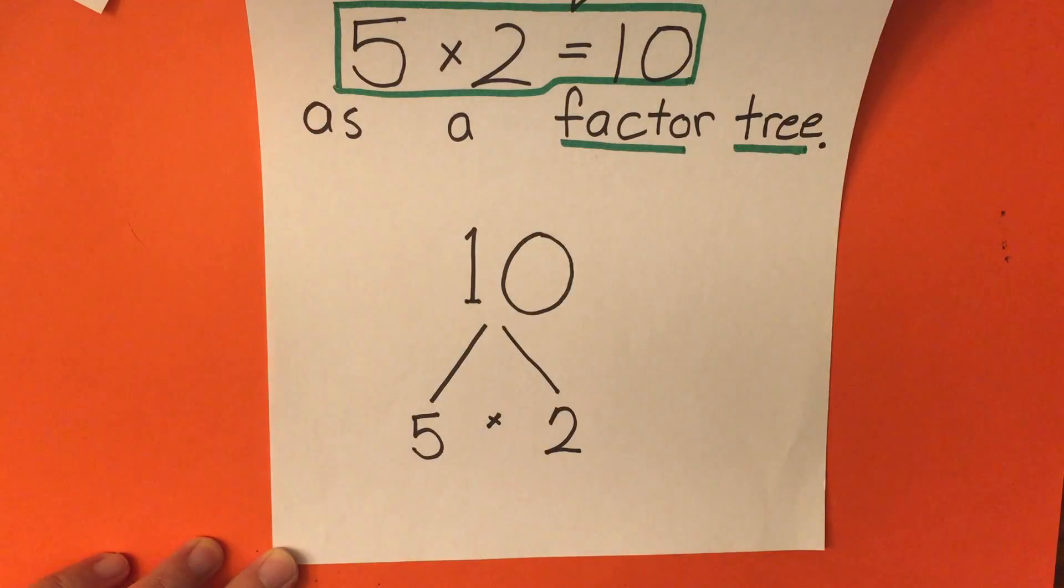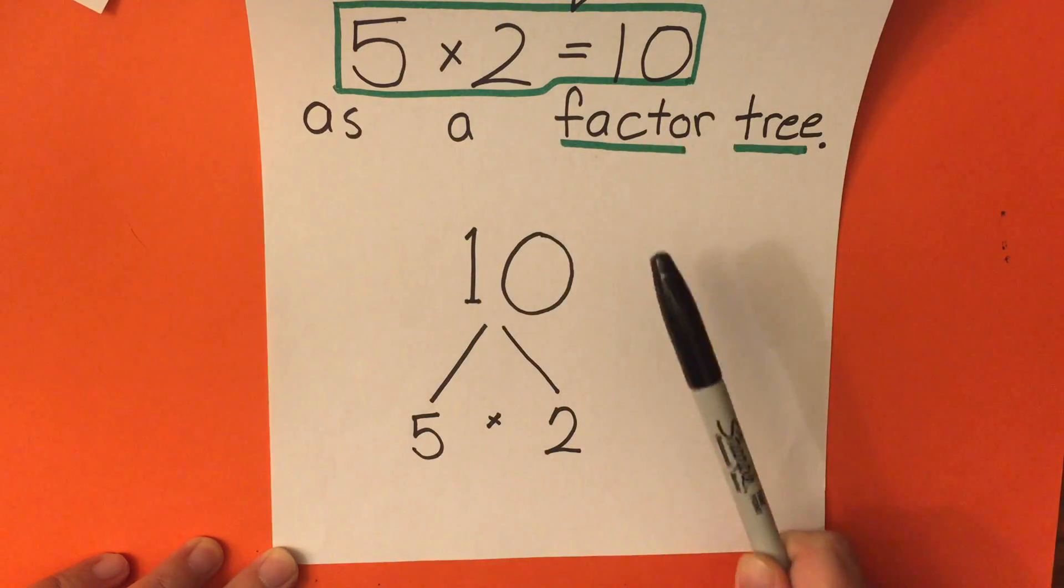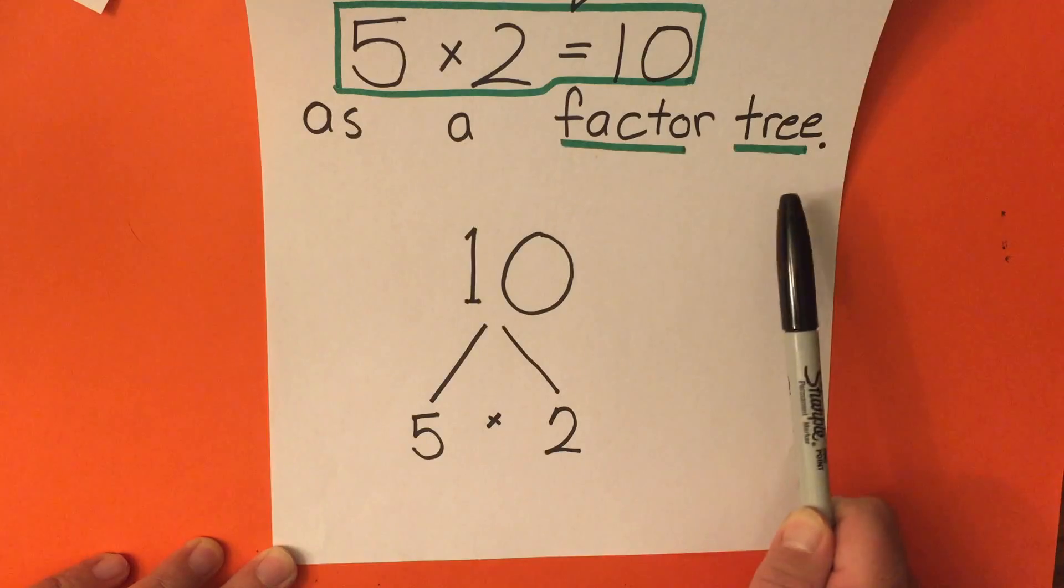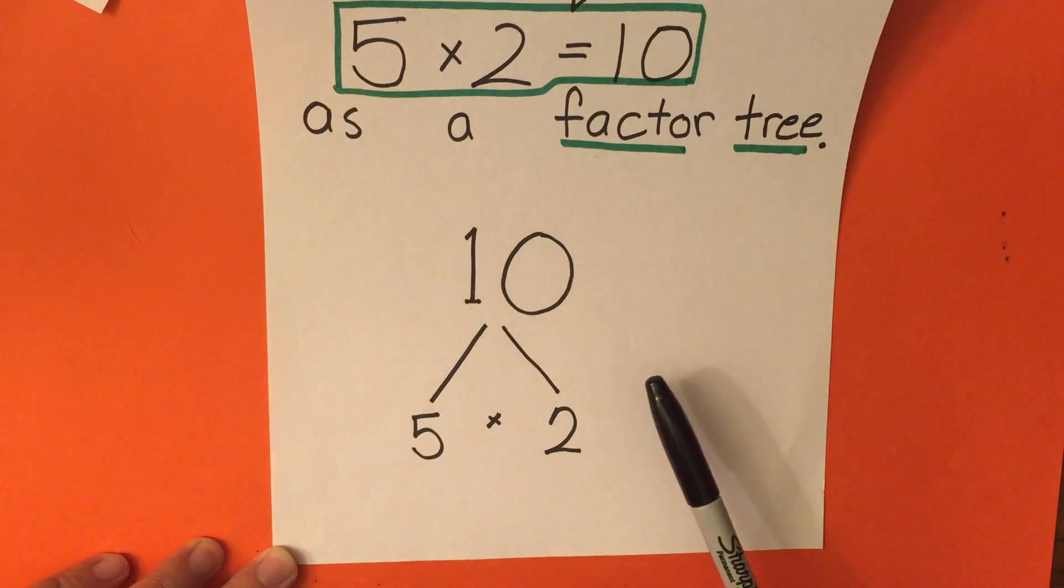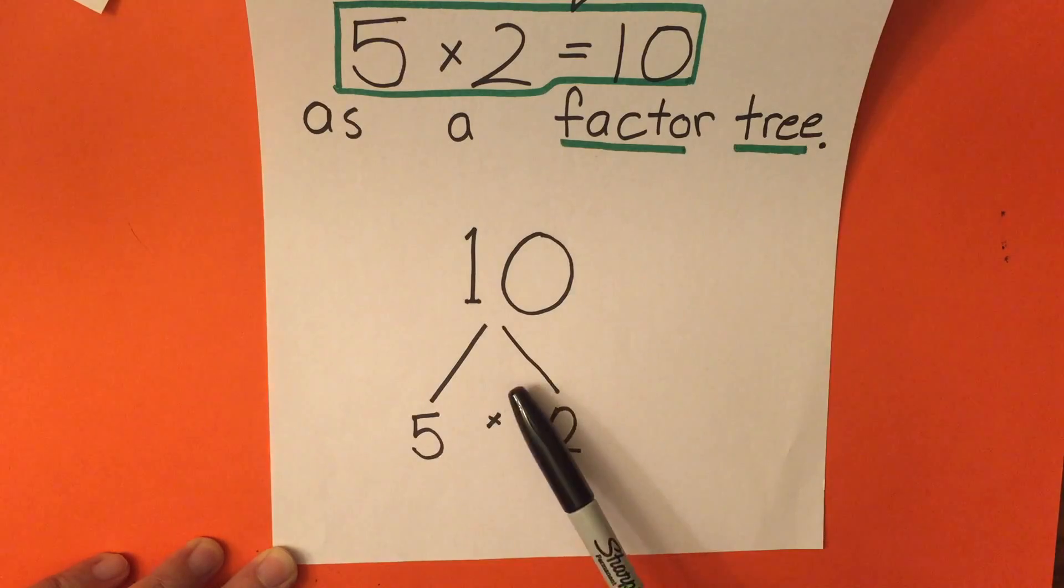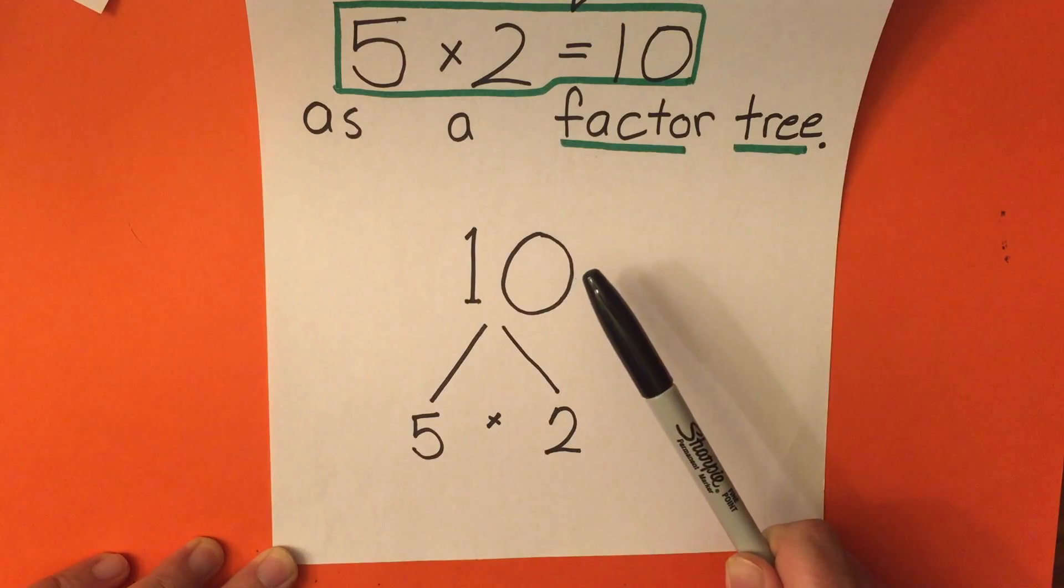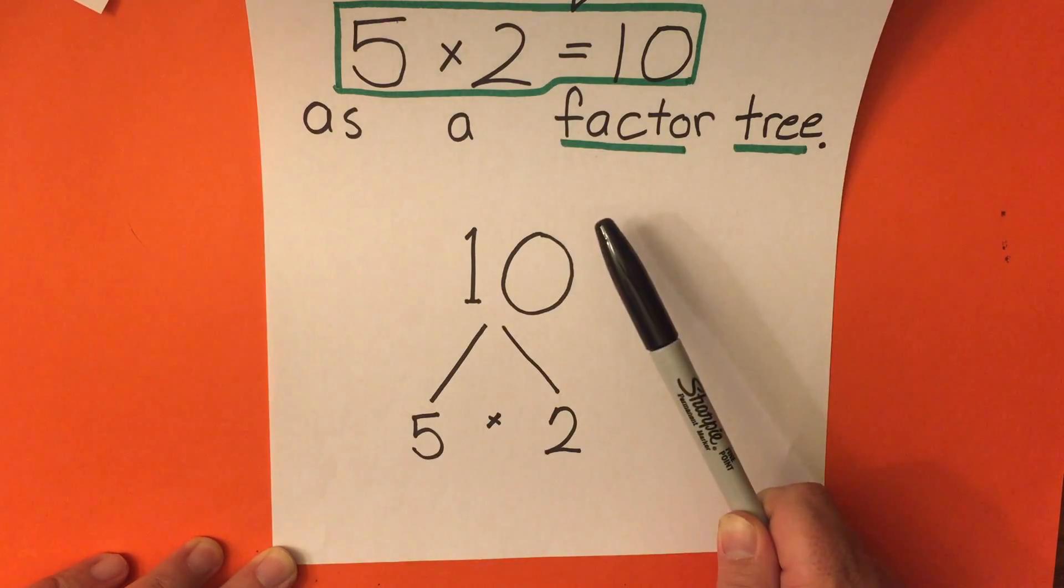Now, let's show this equation 5 times 2 equals 10 again, but this time as a factor tree. So the way I like to think of it is that our two factors, in this case 5 and 2, are the roots of the tree. And our answer, number 10, our multiple, is like the tree itself.